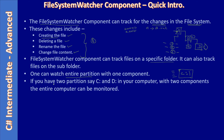Assuming your system has only two partitions — C and D — to track your entire computer for file system changes you can use two FileSystemWatcher components: one dedicated to the C drive and another dedicated to the D drive. Together, these two components will watch for file system changes across your entire computer system.